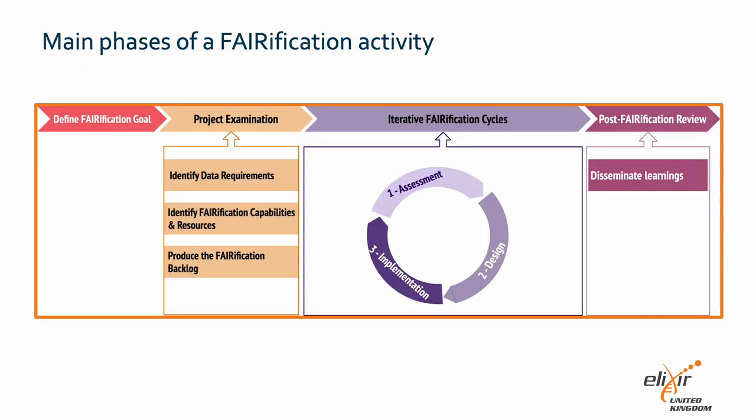The verification process comprises four key phases. In phase one, realistic and practical goals are established. Phase two involves a thorough examination of data, capacity, and resource requirements. Entering phase three, the process initiates an iterative cycle involving assessment, design, and implementation to achieve the goals. Finally, phase four involves a comprehensive review against initially set goals.